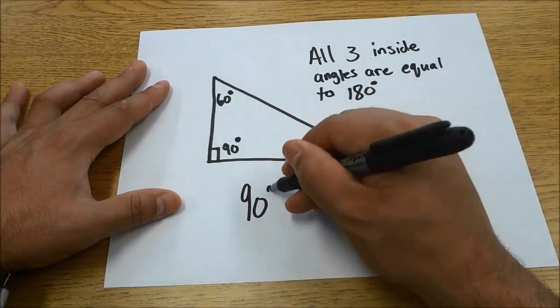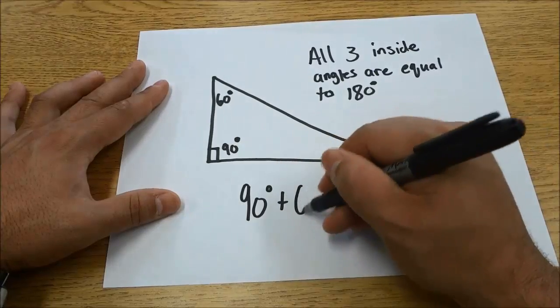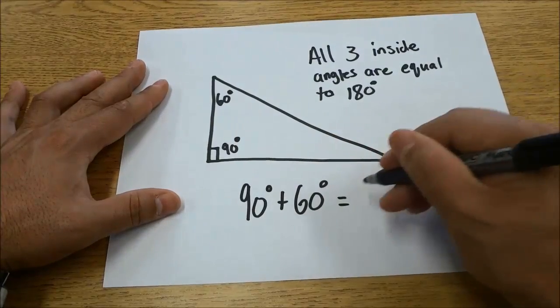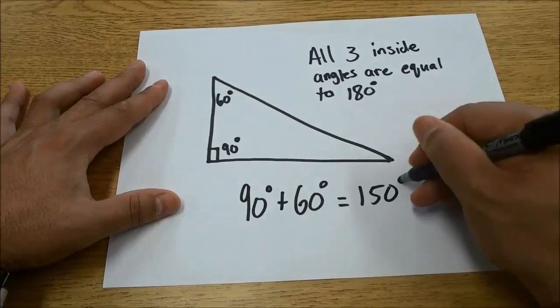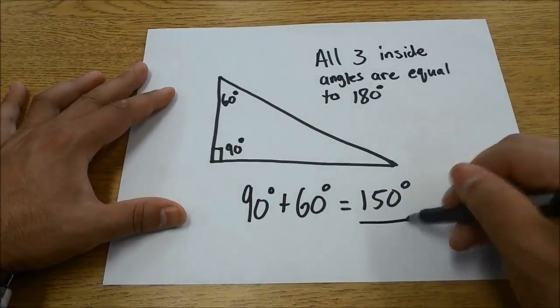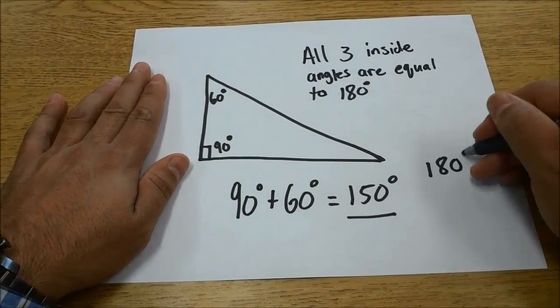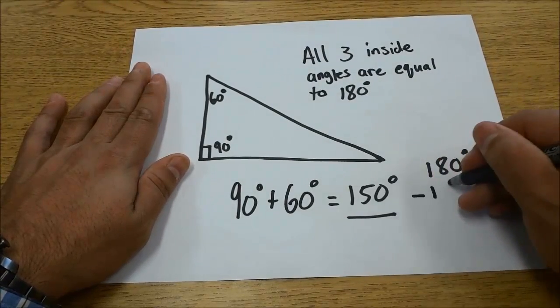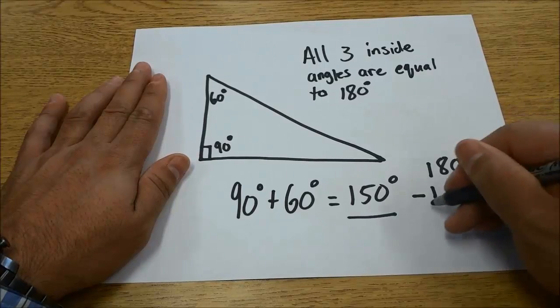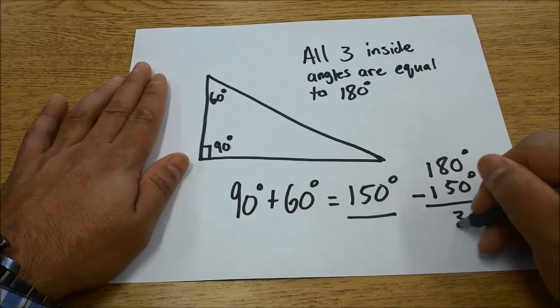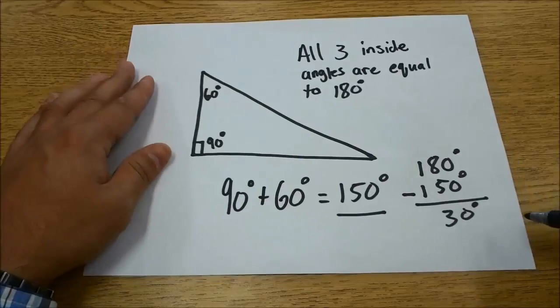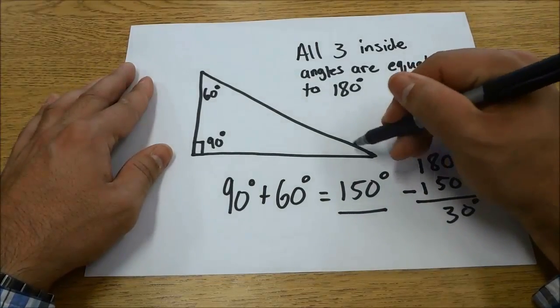So 90 degrees plus 60 degrees equals 150 degrees. And we take this total away: 180 degrees minus 150 degrees equals 30 degrees. That is our final answer.